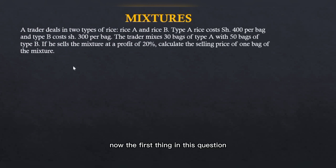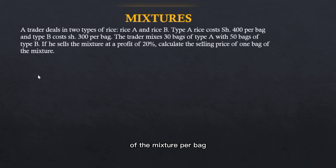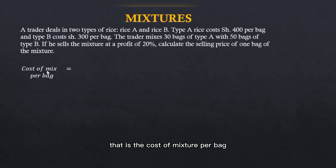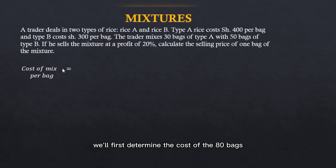The first thing in this question, we are going to determine the cost of the mixture per bag. Before we get the cost of mixture per bag, we will first determine the cost of the 80 bags — that is 30 bags of type A plus 50 bags of type B.